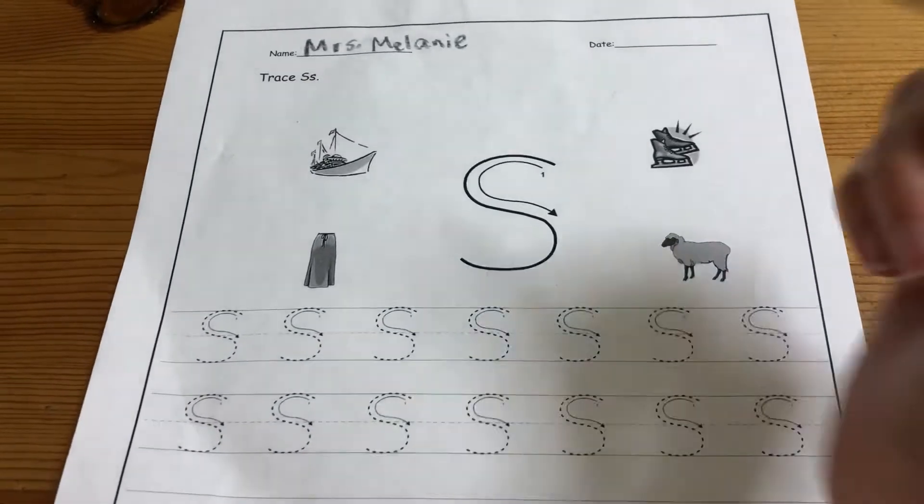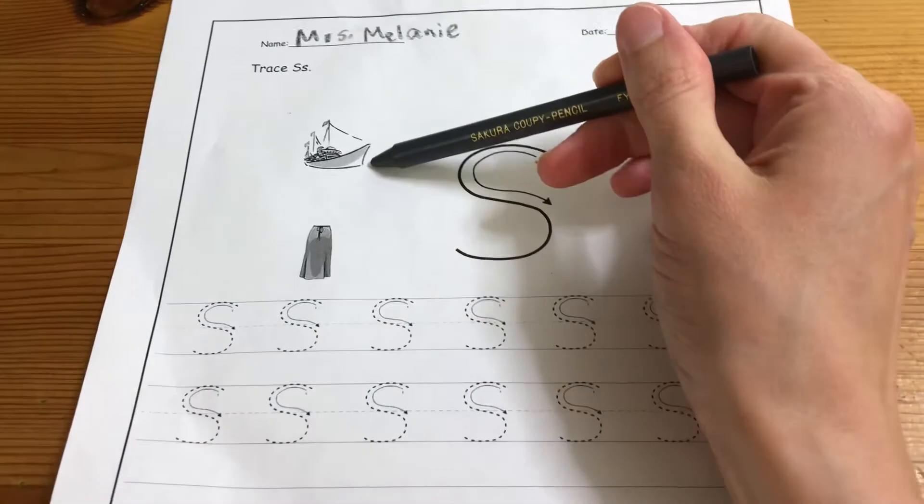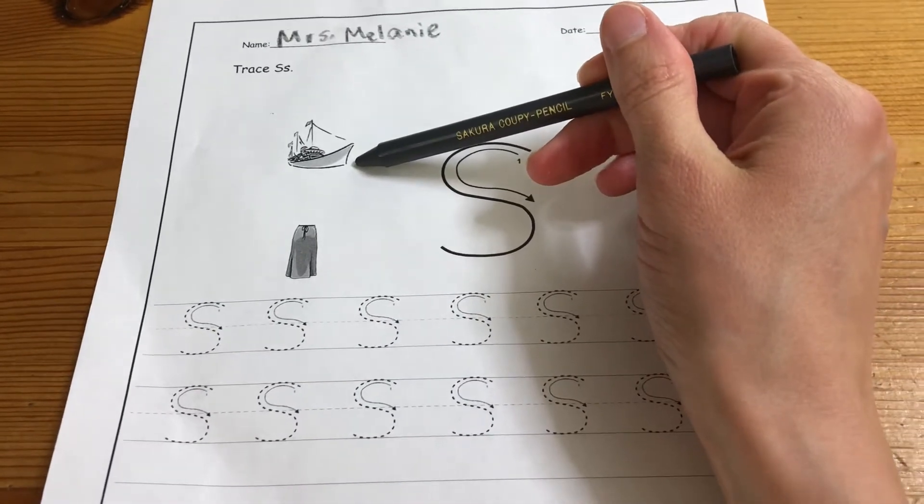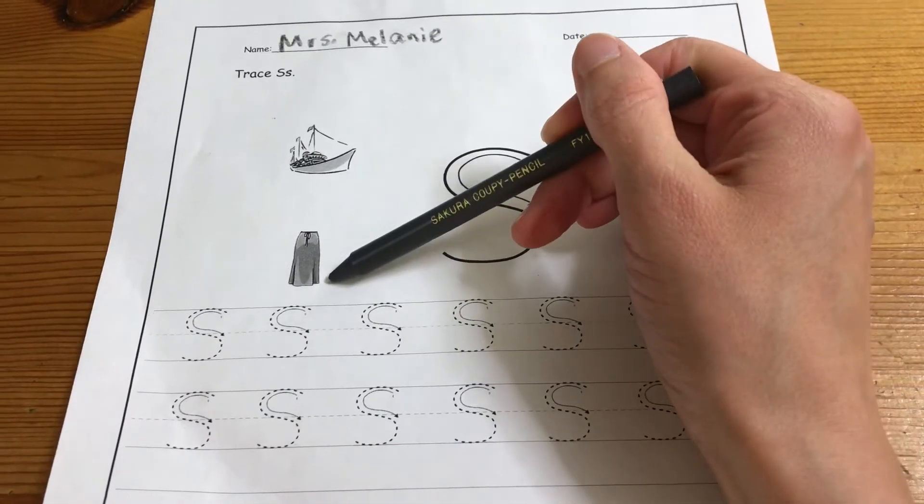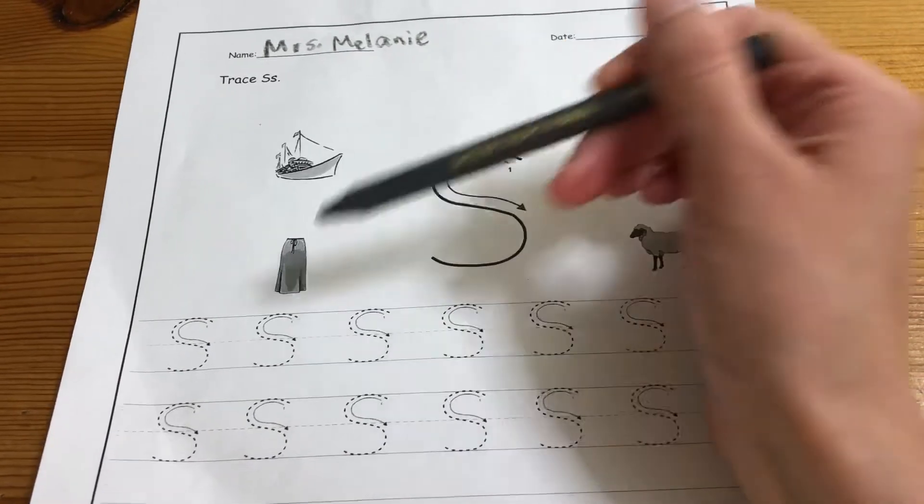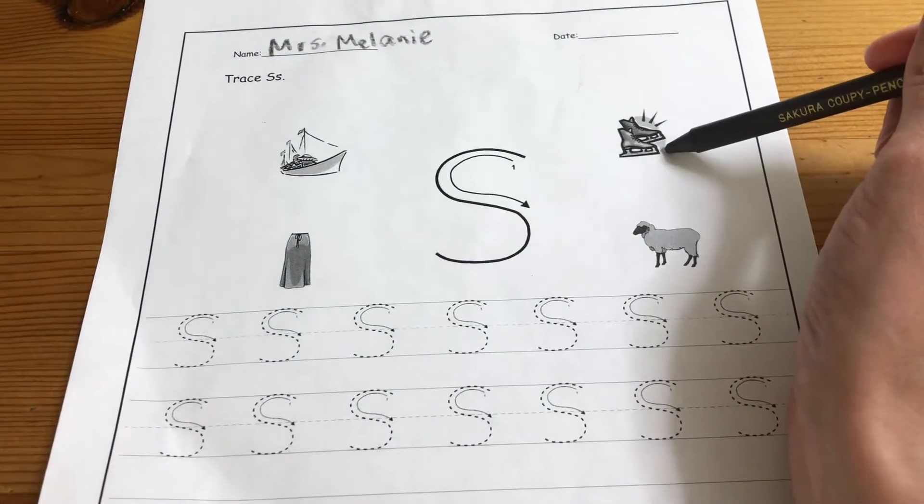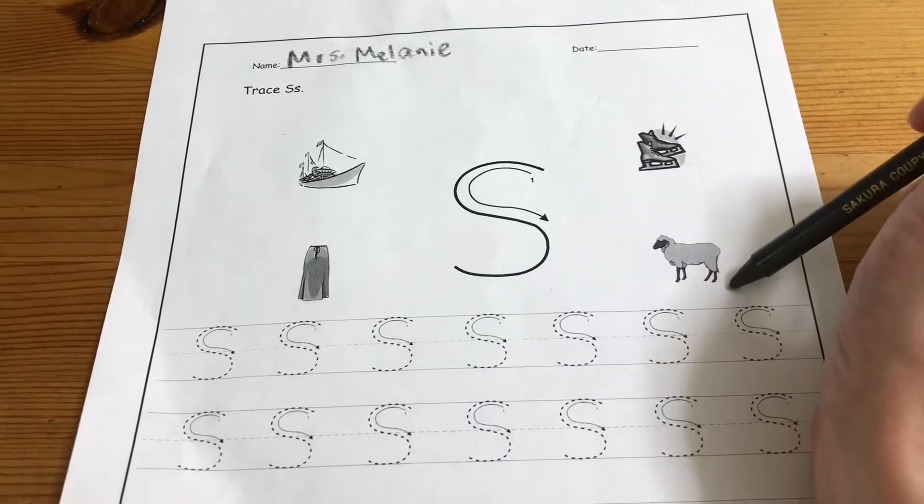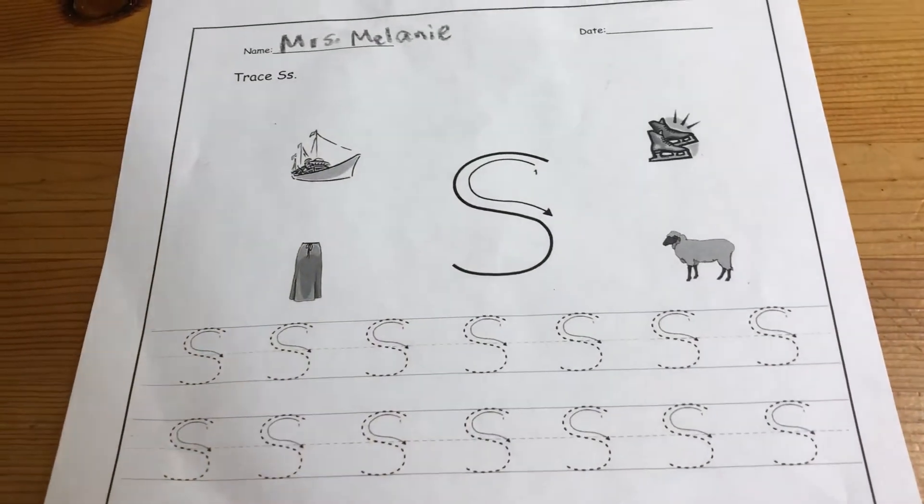Alright, now we have S and our words today are ship, ship, skirt, skirt, skates, skates, sheep, sheep.